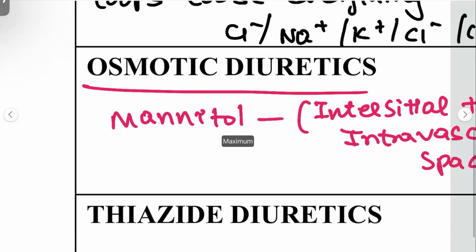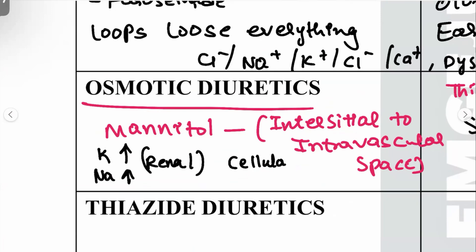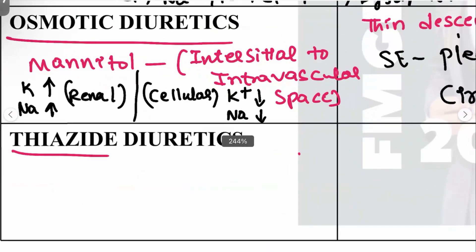An important note about mannitol: at the renal level, potassium and sodium are very high, but at the cellular level, potassium and sodium are very low. This distinction explains how osmotic diuretics produce their effect.